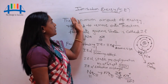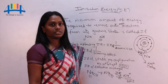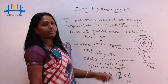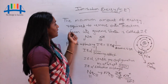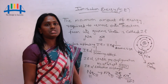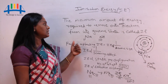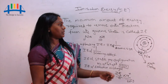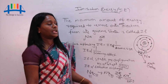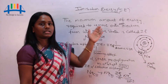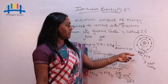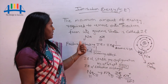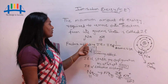Today we are going to learn about ionization energy. Ionization energy means it is the minimum amount of energy that is required to remove the outermost valence electron from its gaseous state. The outermost electron means the electron that is present in the last shell.